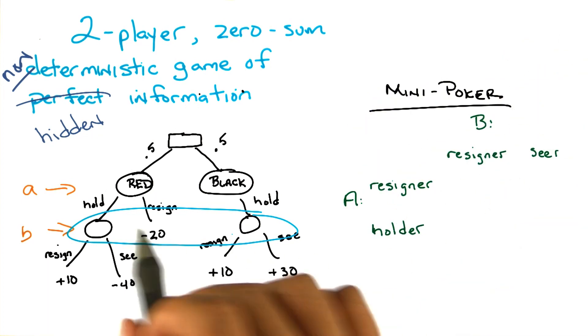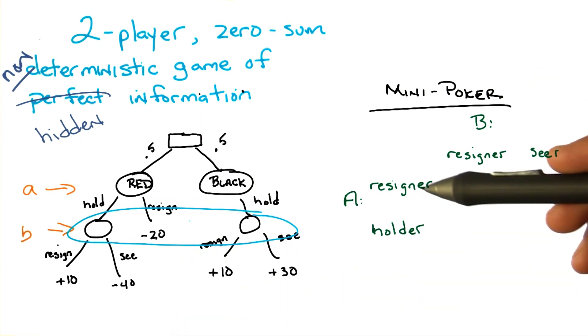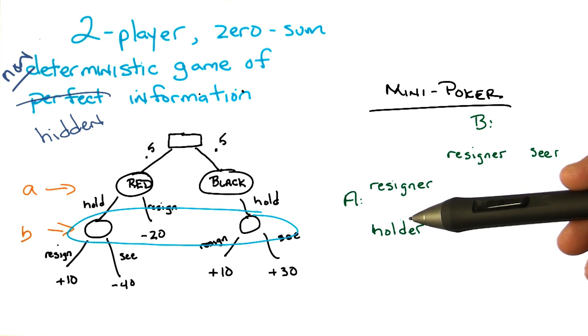So, I'm going to assert, and I think it's pretty easy to see, I hope, that A basically has only two strategies. Either A is the type of person who resigns when a card is red, or A is the type of person who holds when a card is red.